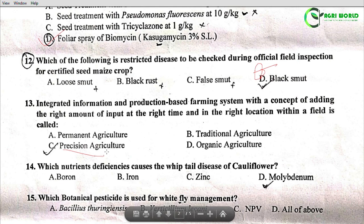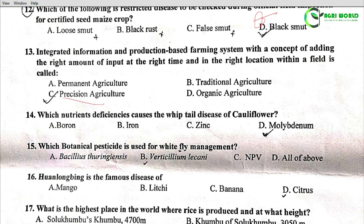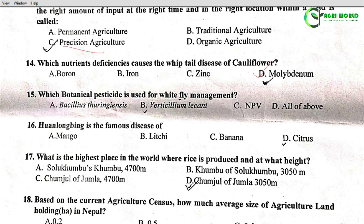Question 14: Which nutrient deficiency causes the whiptail disease of cauliflower? Options: Boron, Iron, Zinc, Molybdenum. Molybdenum deficiency causes the whiptail disease of cauliflower. Question 15: Which botanical pesticide is used for whitefly management? Options: Bacillus thuringiensis, Verticillium lecanii, PV, or all of the above. Verticillium lecanii is used for whitefly management.